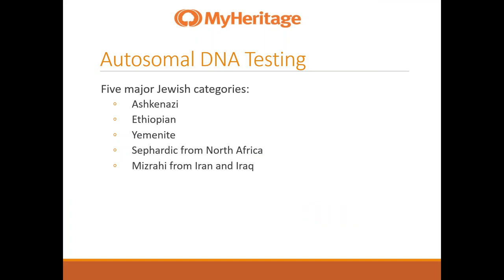Let's talk about autosomal DNA testing. MyHeritage is not the only DNA testing company that has an ethnic category for Jewish, but it does have the most categories at this time. The five major Jewish categories include Ashkenazi, Ethiopian, Yemenite, Sephardic from North Africa, and Mizrahi from Iran and Iraq. Some other results may also end up being Sephardic, including Italian, Greek, Bulgarian, Turkish, or North African.